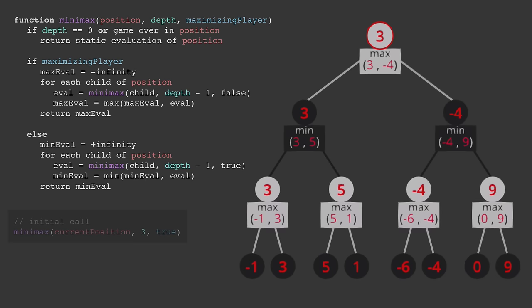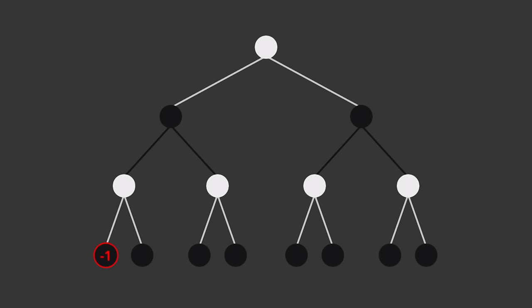Now that we've seen how plain minimax works, let's run through this example yet again to look at how it can be sped up using pruning. These first few steps are the same as before, but consider the situation we have after evaluating this plus 5 position. Without yet evaluating the other position, we know that white can at least get a 5 from here, so we can mark this position as being greater than or equal to 5. We can now see that black won't go down this branch, because he already has a better option available. This means we don't have to waste any computation on evaluating this final position — we can simply pretend it doesn't exist. In other words, we've pruned it from the tree.